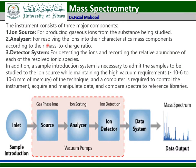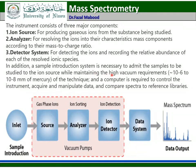A mass spectrometer consists of three major components: ion source, analyzer, and detector system. The ion source produces gaseous ions from the substance being studied. The analyzer resolves the ions into characteristic mass components according to their mass-to-charge ratio. The detector system detects the ions and records the relative abundance of each resolved ionic species. In addition, a sample introduction system is necessary to admit the sample to the ion source while maintaining the high vacuum requirement, and a computer is required to control the instrument, acquire and manipulate data, and compare spectra to reference libraries.